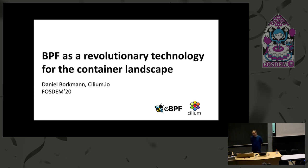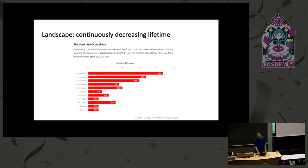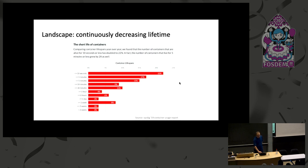I want to start with the container landscape. Containers have existed for a long time, but how do production deployments look? I found a nice usage report from the Sysdig folks where they looked into various aspects. One trend I found very interesting is the lifetime of a container — there's a continuously decreasing lifetime. Many containers seem to run for 10 seconds or less, and that basically doubled over the last year, and that trend seems to be increasing.